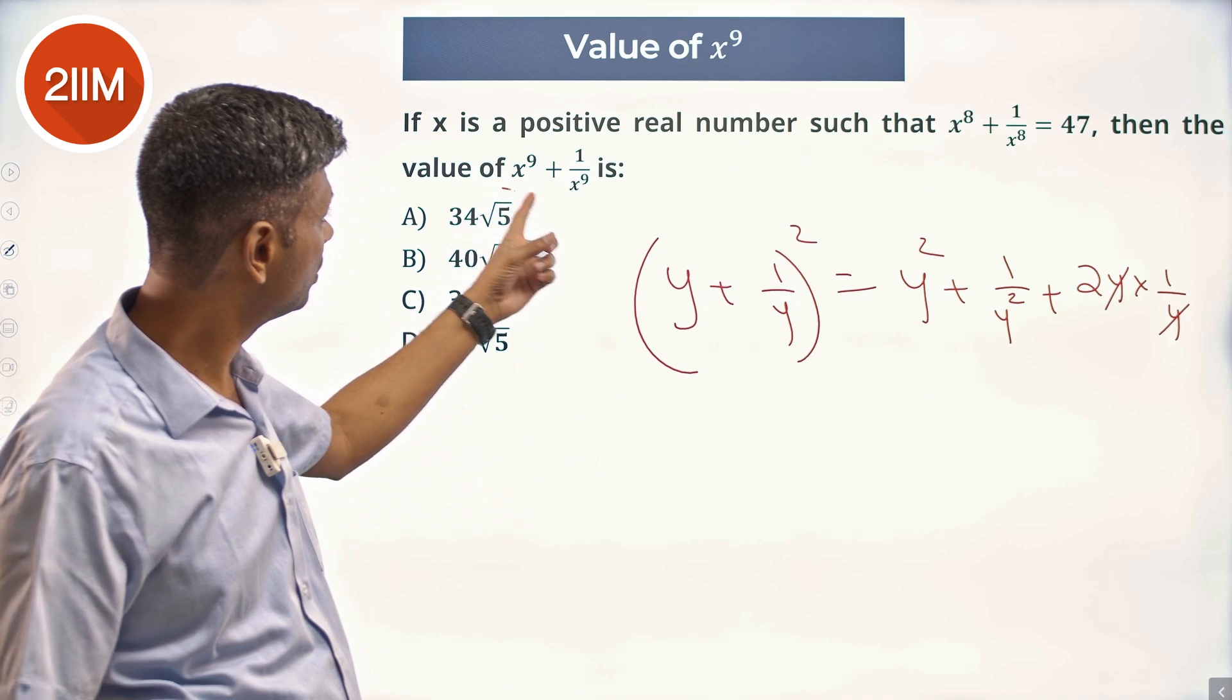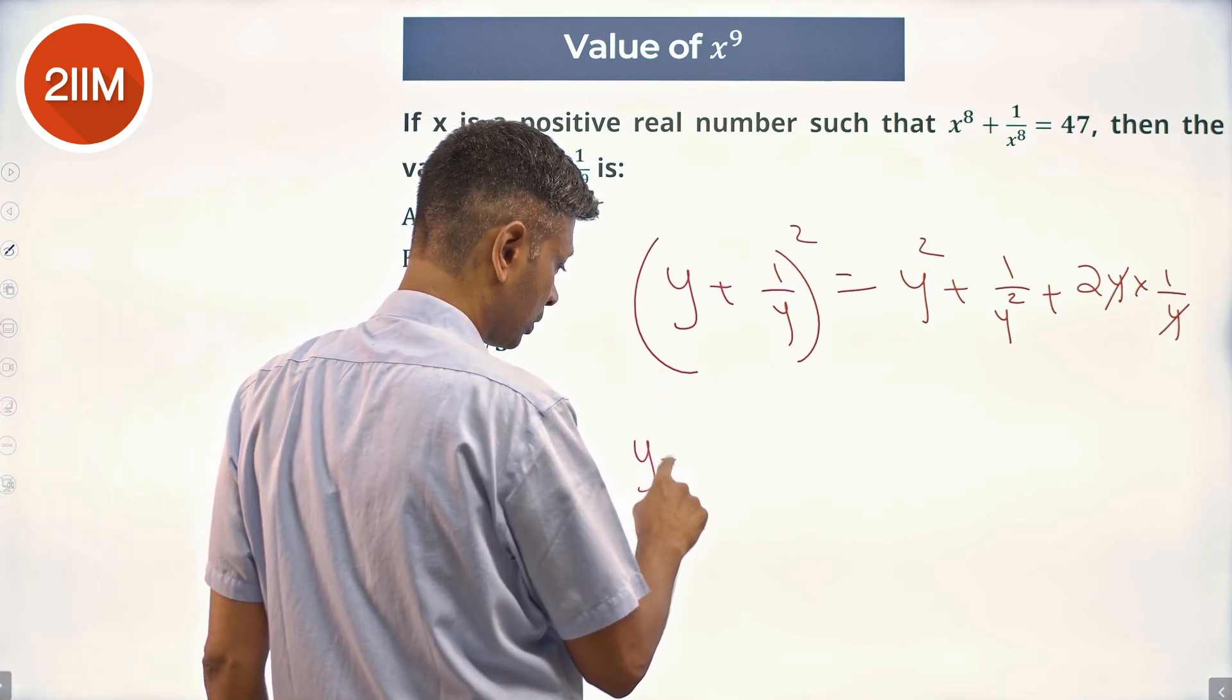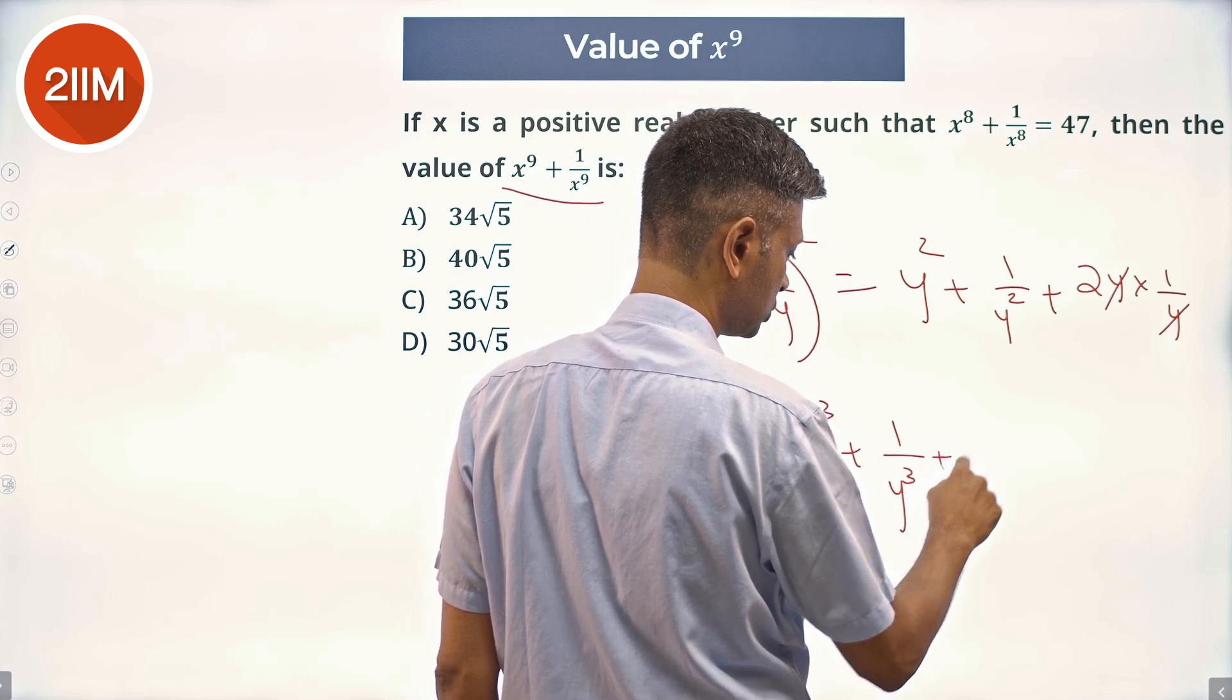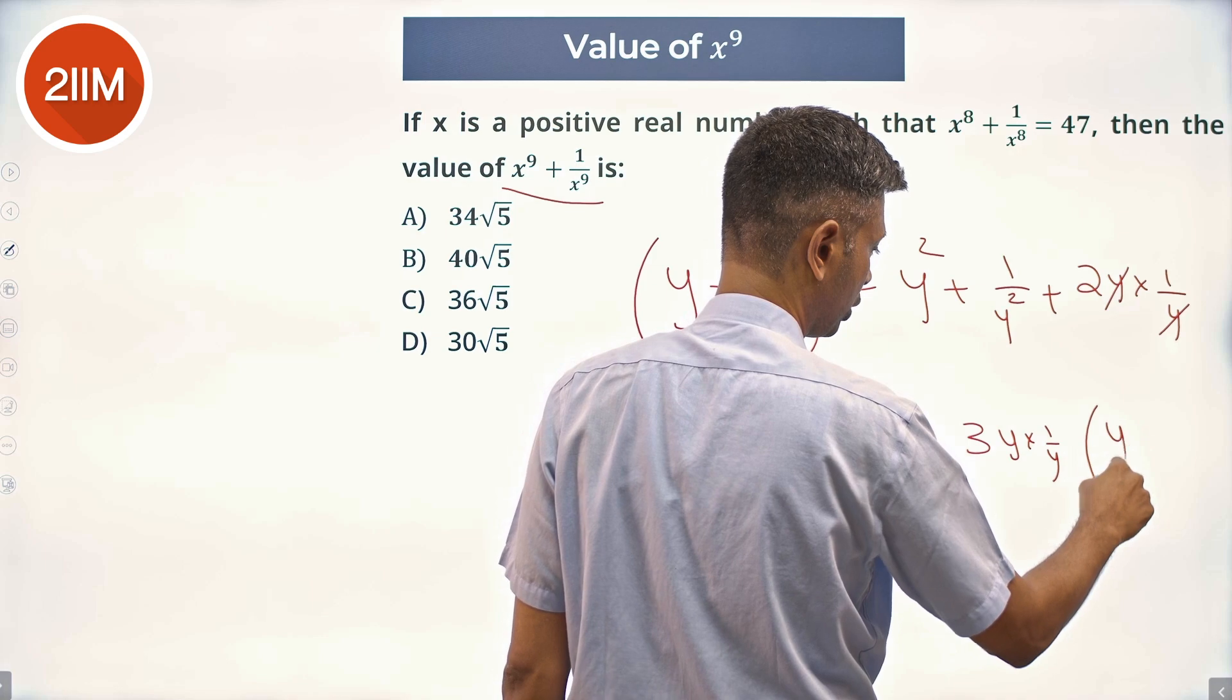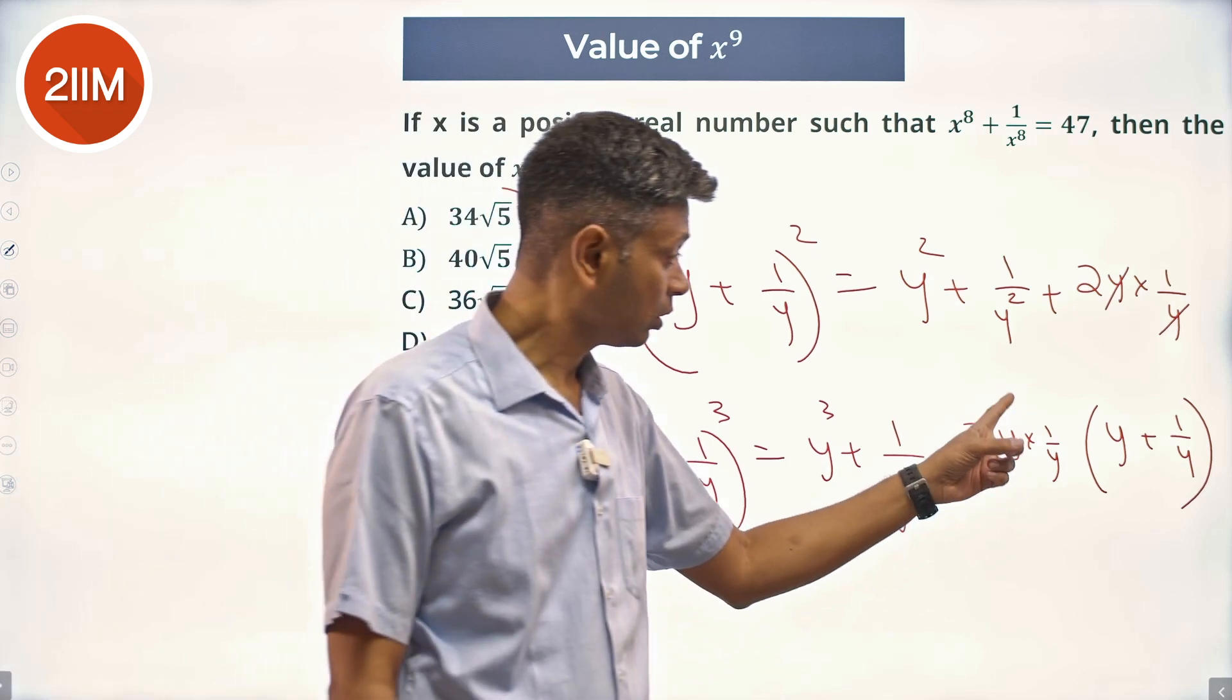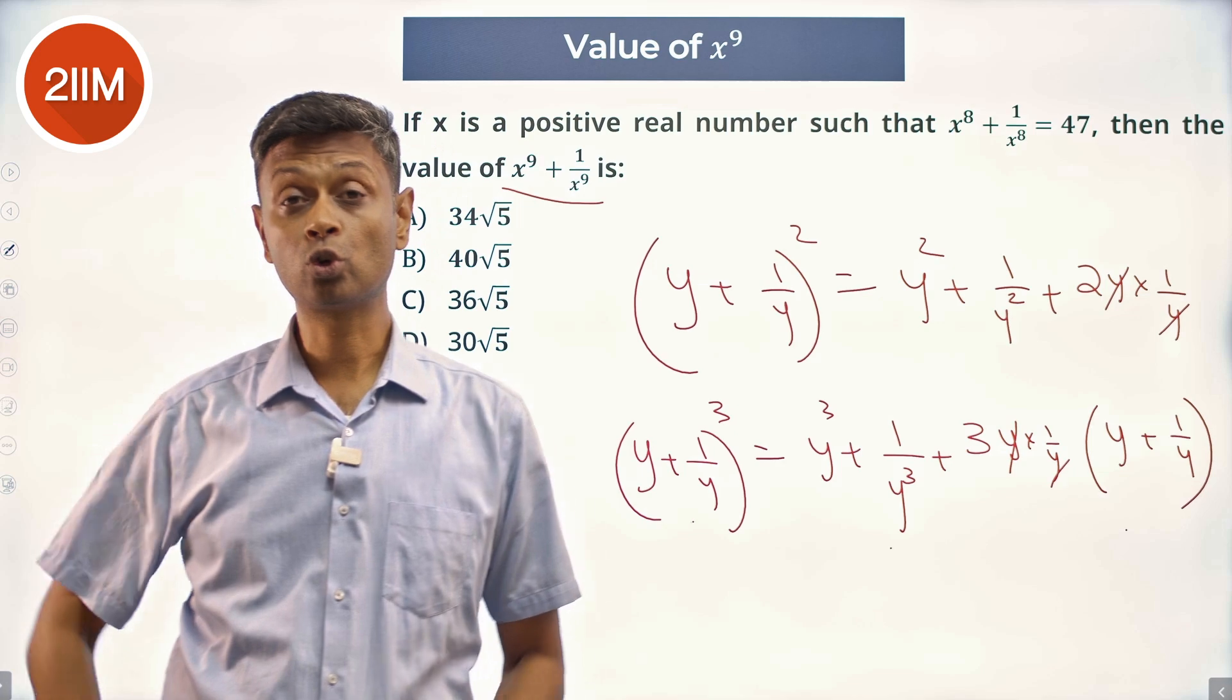How do we go to this? What's happening here? Suppose we have (y + 1/y)^3, this is y^3 + 1/y^3 + 3(y)(1/y)(y + 1/y). Nice. So we have this and this, we've got this. So this is the method.